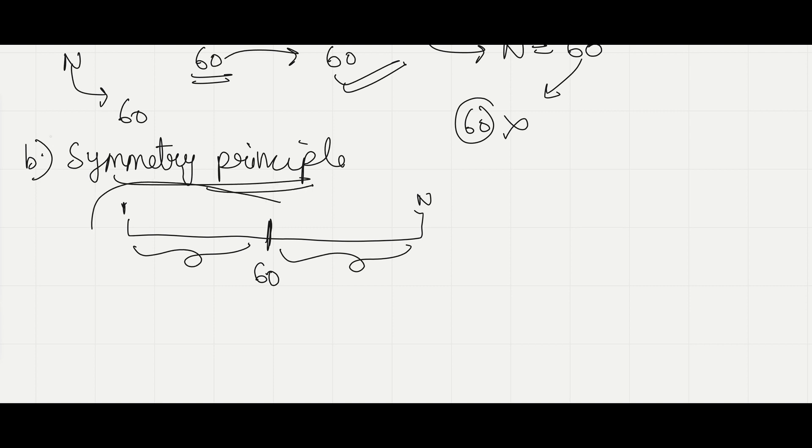So this segment, we have 60 locomotives and we have seen the 60th locomotive. So number of locomotives left over here would be 59. Similarly, number of locomotives left over here would be 59. So our estimate for capital N would be 59 plus 59 plus the 60th locomotive that we have seen. This comes out to be 119.